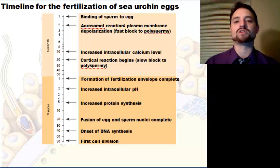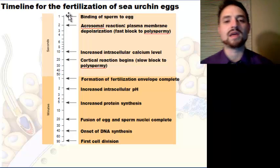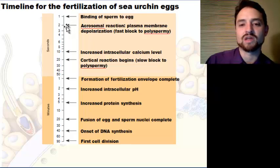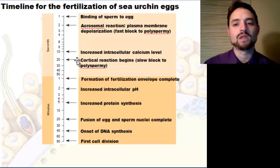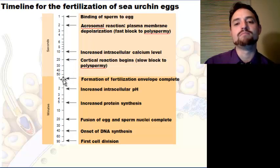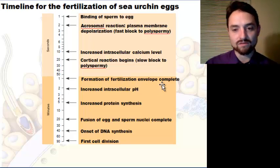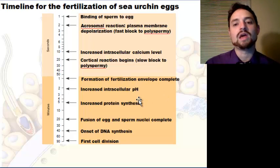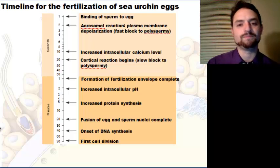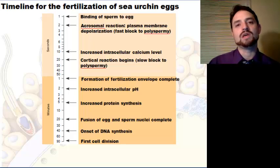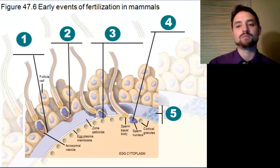The timeline for sea urchin egg fertilization: at the first second, sperm and egg bind; at about two seconds, the acrosomal reaction occurs and intracellular calcium levels increase; at about 10 seconds, the cortical reaction begins — slow block to polyspermy; at about 20 seconds, the fertilization envelope is complete; at one minute, increased pH and increased protein synthesis begin; fusion of egg and sperm nuclei is completed around 20 minutes; DNA synthesis onset at 40 minutes; and the first cell division at 90 minutes.